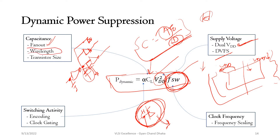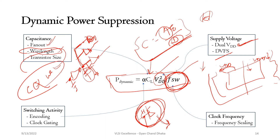There is also an RC effect from interconnects — wire length causes large capacitance, so minimizing wire length helps optimize load capacitance. Transistor capacitance is also proportional to the width (W) and length (L) of the transistor. By optimizing at the transistor level, fan-out level, and interconnect level — all VLSI physical design concepts — dynamic power can be minimized.